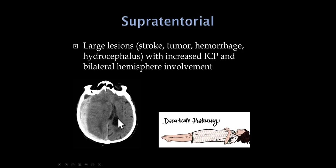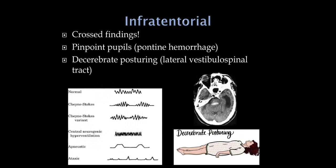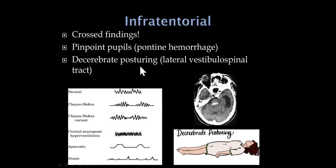With lesions above the brainstem we may see decorticate posturing — flexed elbows and extended feet. Infratentorial presentations are often seen when a supratentorial coma leads to herniation with pressure affecting the brainstem. When that happens, the patient may progress from decorticate to decerebrate posturing — arms and legs both extended — which is a very bad sign indicating pressure down to the lower midbrain and upper pons, involving the lateral vestibulospinal tract.